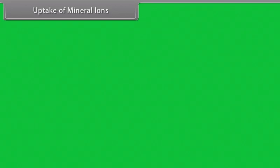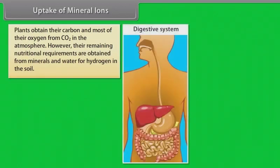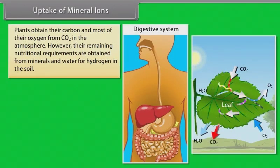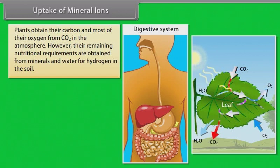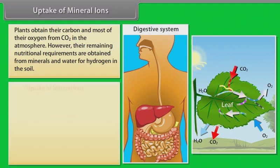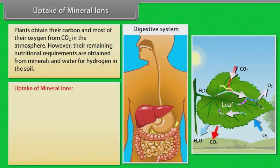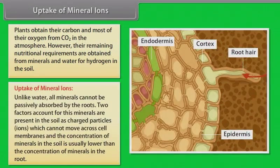As we all know, plants do not have teeth and digestive organs like us. They obtain their carbon and most of their oxygen from CO2 in the atmosphere. However, their remaining nutritional requirements are obtained from minerals and water — hydrogen in the soil. Let us first know how they uptake mineral ions.